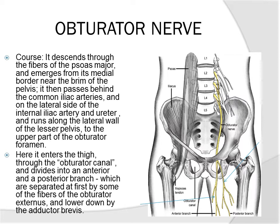As it descends through the psoas, it emerges from the medial border of the psoas — the medial border, not the lateral border like the femoral nerve and the lateral femoral cutaneous nerve. It comes from the medial border near the brim of the pelvis, and from there it passes behind the common iliac arteries, then on the lateral side of the internal iliac artery and the ureter.